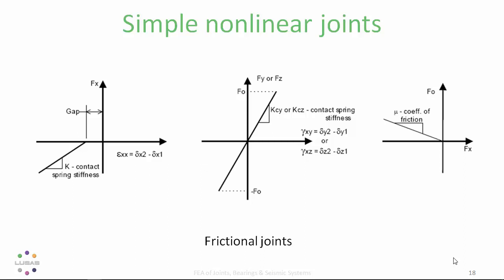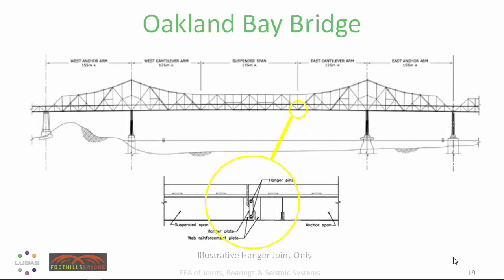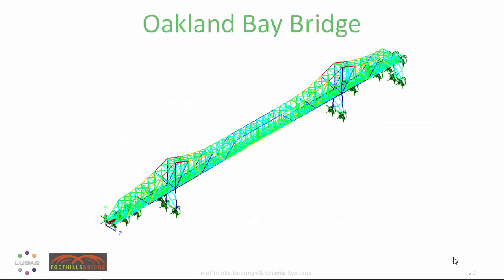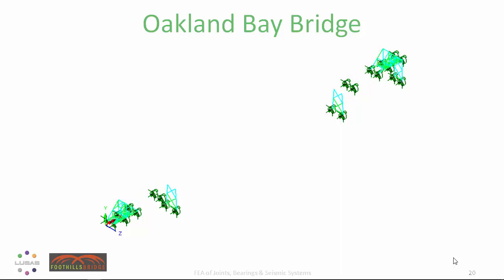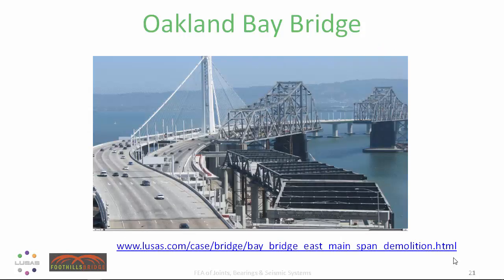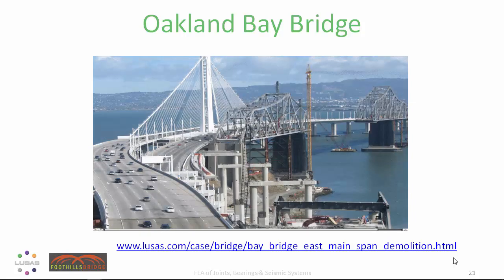Joint materials may also include thermal properties along with mass and damping properties to suit dynamic analysis requirements. Foothills Bridge built a global model of the San Francisco–Oakland Bay Bridge with its hanger joints for a really comprehensive model for this large dismantling project.